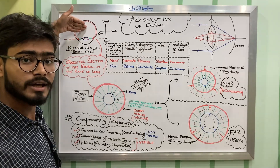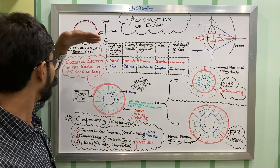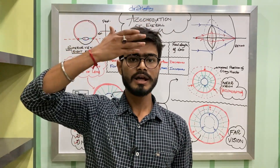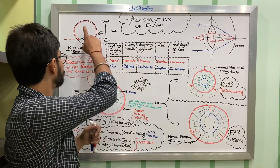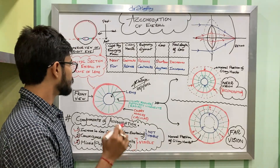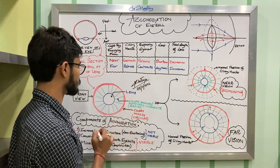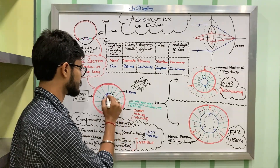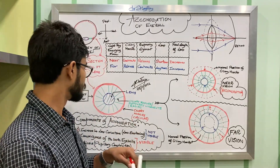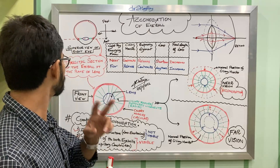Now, looking at the eyeball from above, we take a sagittal section at the plane of the lens of the right eye, viewed from the front. This gives us a view where the ciliary muscle is circular, arranged in a circumference. The lens sits in the center, and the green-colored ciliary zonules — also called suspensory ligaments — hold the lens in position and are attached to the ciliary muscle at their periphery.